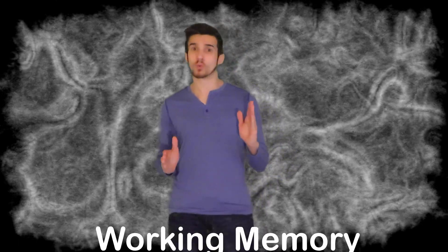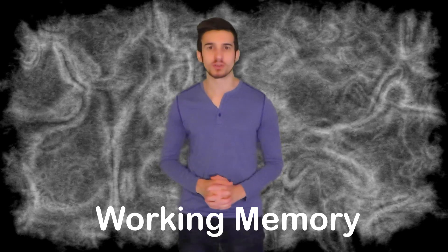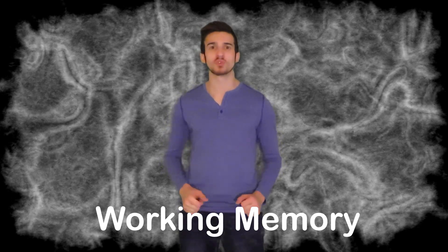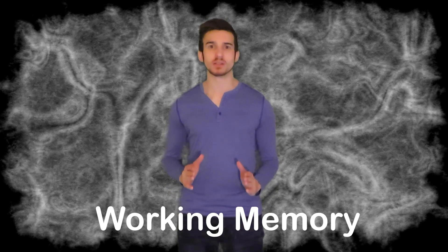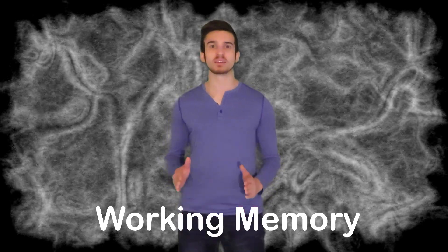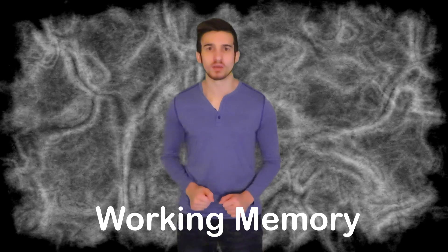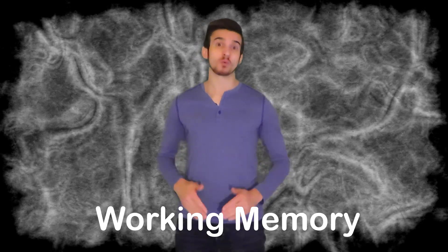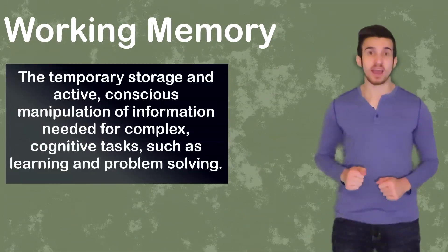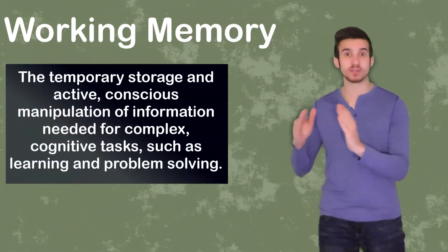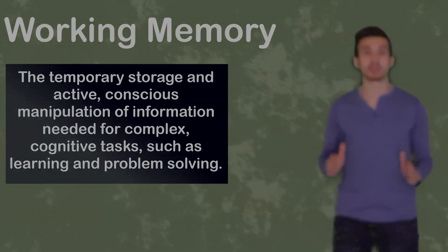When looking at short-term memory, we oftentimes hear this word working memory being thrown in there. Working memory and short-term memory are going to be interchangeable, but for the AP test, there is a distinction between the two. In 1974, psychologist Alan Baddeley theorized the model for working memory. Baddeley's model basically states that our working memory is going to be the temporary storage and active conscious manipulation of information needed for complex cognitive tasks such as learning. Baddeley argued that our short-term memory is for more than just chunking, rehearsing, and the passive storage of information. He argued that we're not only storing information in our short-term memory, but we're manipulating this information as well.